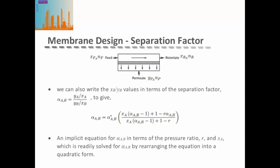It's convenient to write the ratio of mole fractions between the retentate and permeate side for component B in terms of our original separation factor equation. Doing this generates an expression for the separation factor in terms of the ideal separation factor, the composition of component A on the feed retentate side, and the pressure ratio. This is an implicit equation for the separation factor, but it can be easily solved using something like Solver in Excel, or by rearranging into a quadratic equation and solving explicitly.